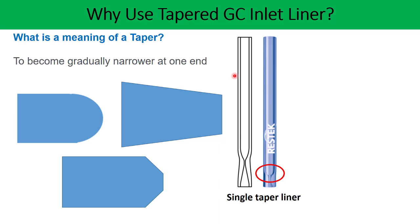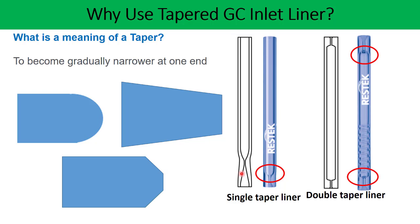In the case of an inlet liner, this taper geometry is used, and you can see in the diagram that at one end the size of the liner has gradually narrowed — this is called a taper liner. Since the taper is present at only one end, this is a single taper liner. There is also a double taper liner where the liner has gradually narrowed at both ends — this is the double taper liner.